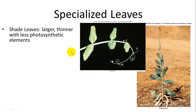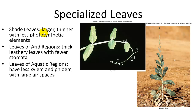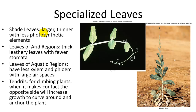There are many specialized leaves — not all are just for photosynthesis. Shade leaves are larger, thinner, with fewer photosynthetic elements. Leaves of arid regions are thick and leathery with fewer stomata to prevent fluid loss. Aquatic leaves have less xylem and phloem with more air spaces. Tendrils are modified leaves that, when they make contact with something, rapidly grow on one side but not the other, causing a spiraling effect that anchors the plant.